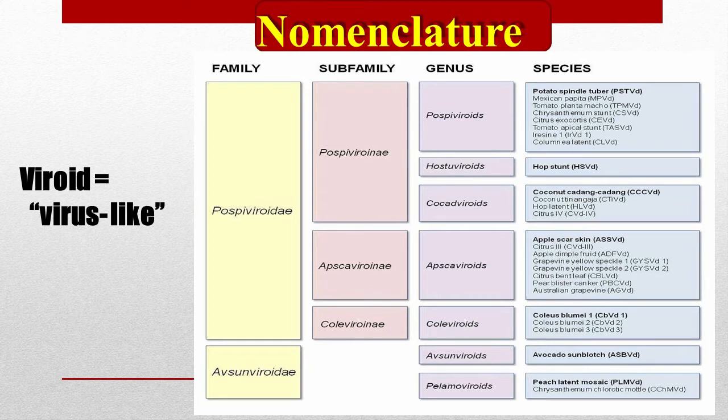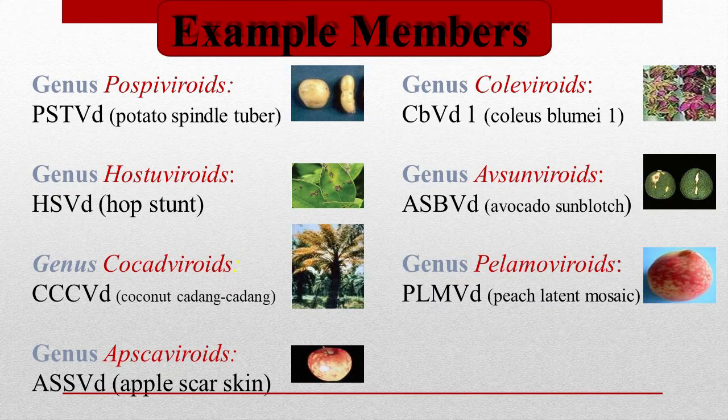Viroids are composed of two families: Pospiviroidae and Avsunviroidae, and they have seven total genera and numerous species under them. These are some examples of the viroid members.